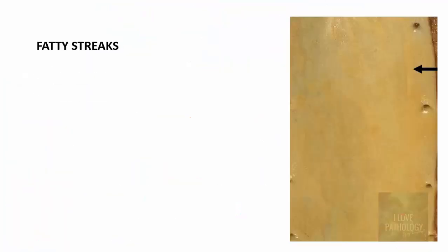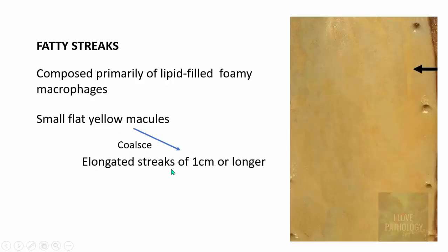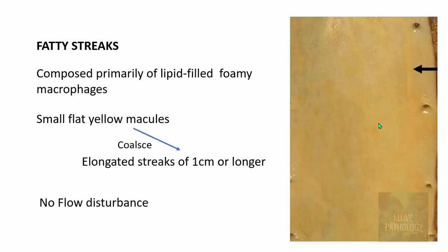The first lesion in atheroma formation is fatty streaks. Fatty streaks are composed primarily of lipid-filled foamy macrophages. These are small flat yellow macules and over a period of time they coalesce to form elongated streaks of 1 cm or even longer. They are so subtle that they might not be visible at times; only when they coalesce to form longer lesions will they be visible. The only good thing about fatty streaks is that there is no flow disturbance — they are tiny lesions that will not cause any luminal compromise or obstruction. But ultimately they can evolve into plaques.